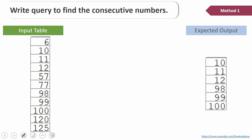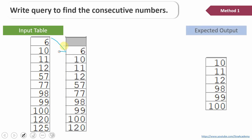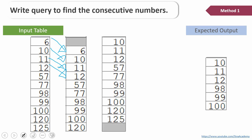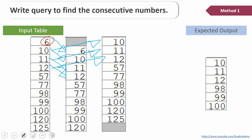For example, using the lag function, we can get the previous number — so 6 will get printed in the second row, 10 in the third row, 11 in the fourth row, 12 in the fifth row. Similarly, using the lead function, we can get the next number in the current position — for example, 10 will get printed in the first row, 11 in the second row, 12 in the third row. Once we have the number and its previous and next numbers in the same row, it is very easy for us to compare.